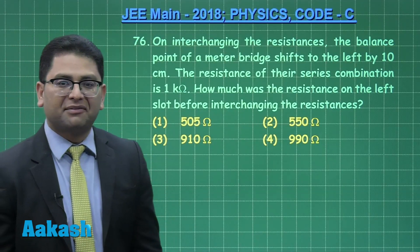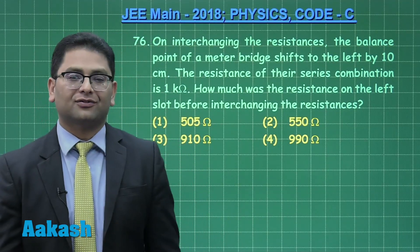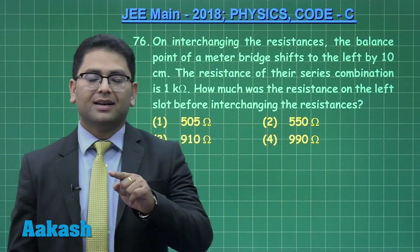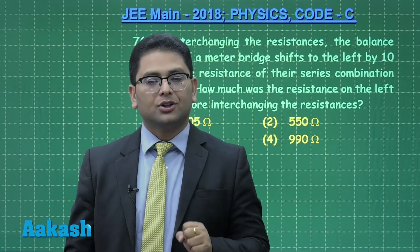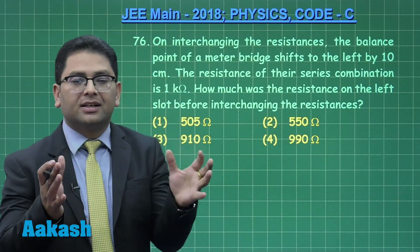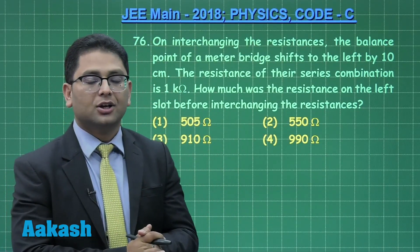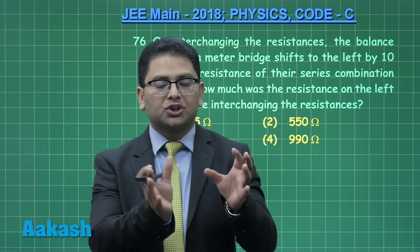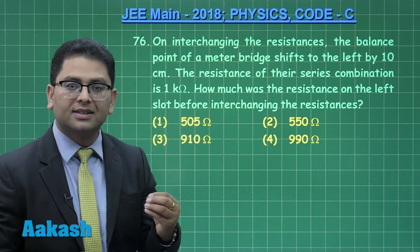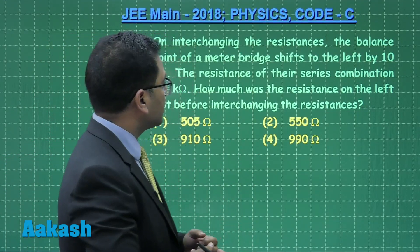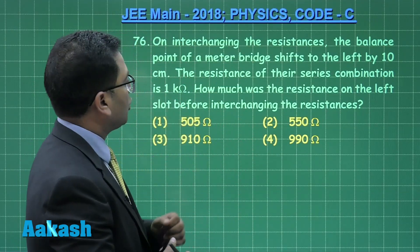Question number 76 is from current electricity, specifically the experimental part. This is the second question from the same topic, which clearly indicates the experimental part has to be taken very seriously. The portion which is only in JEE mains includes the experimental part.